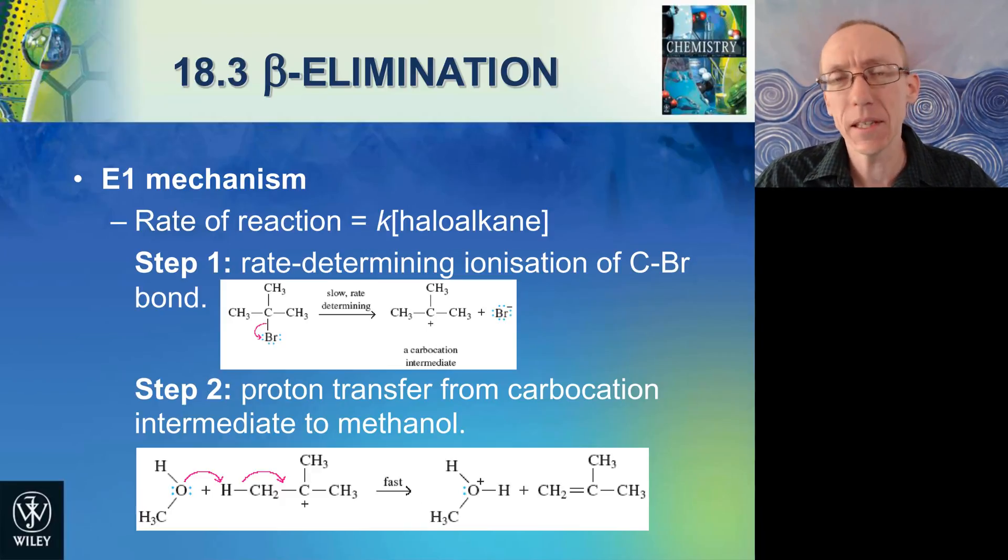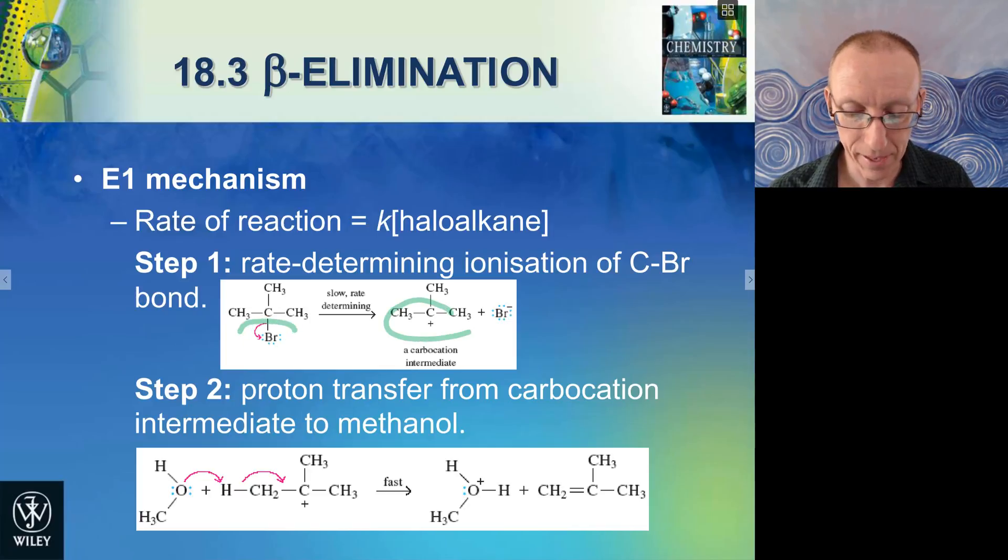There's two major mechanisms for elimination reactions. The first is the E1 mechanism. The rate of this reaction is only related to the concentration of the haloalkane times the rate constant. So this is very similar to the SN1 reaction mechanism that you might have seen before. So the rate-determining step in this reaction is the ionization of the carbon-halogen bond. So we need to break that carbon-halogen bond to make a carbocation. And you might recognize this is the same first step as an SN1 substitution reaction.